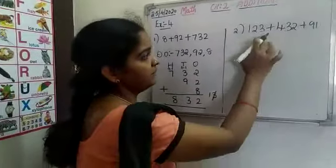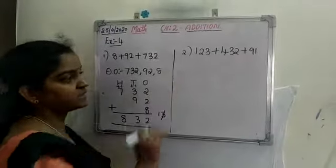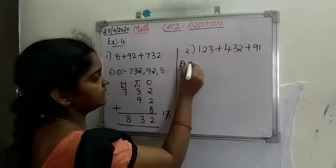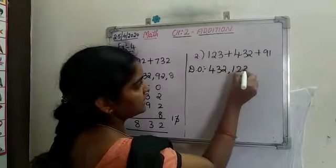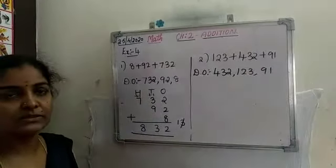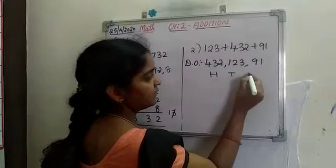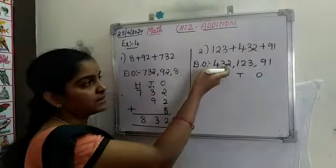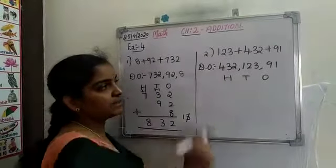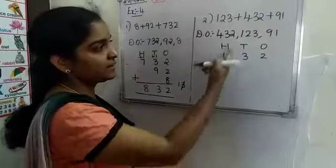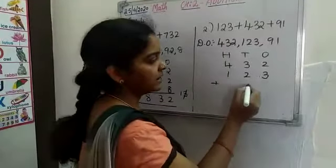Now here we are having 3 addends. So first arrange in descending order: the bigger number is 432, then 123, then 91. Now write the places — hundreds, tens, ones — because the biggest number has 3 digits. Write 432 in the columns, then 123, then 91 goes in tens and ones place only. Always start adding from ones place.